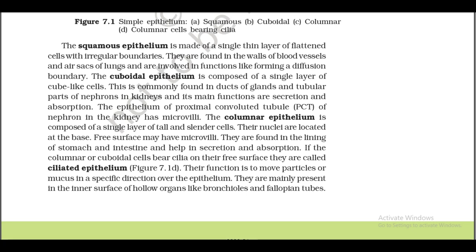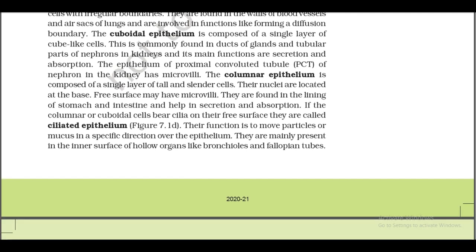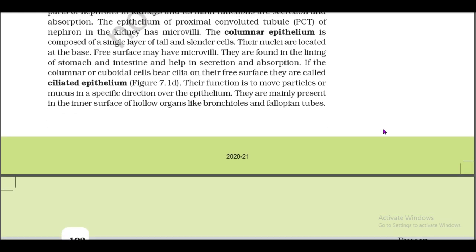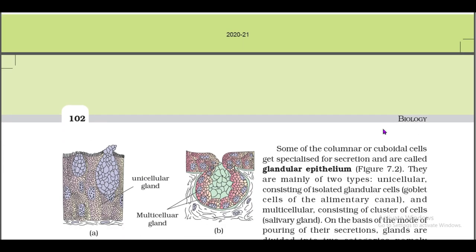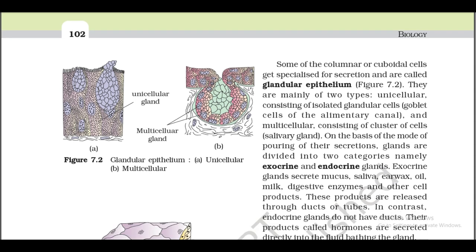The columnar epithelium is composed of a single layer of tall and slender cells. The nuclei are located at the base; the free surface may have microvilli. They are found in the lining of stomach and intestine and help in secretion and absorption. If the columnar or cuboidal cells bear cilia on their free surface, they are called ciliated epithelium. Their function is to move particles or mucus in a specific direction. They are mainly present in the inner surface of hollow organs like bronchioles and fallopian tubes.